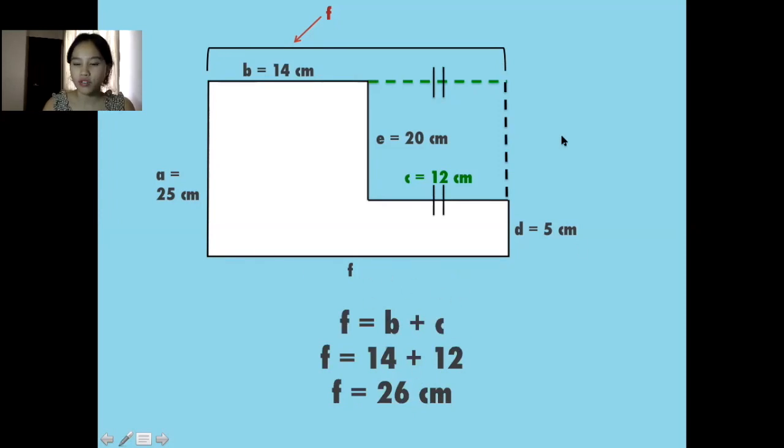And now that you know all the values of all the letters, you can just add up all the sides to get the perimeter.